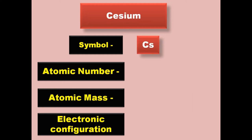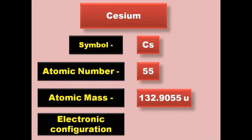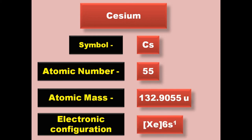Caesium has symbol Cs, atomic number 55, atomic mass 132.9055, electronic configuration [Xe] 6s1. Caesium is an alkaline metal and exists in solid form at room temperature.